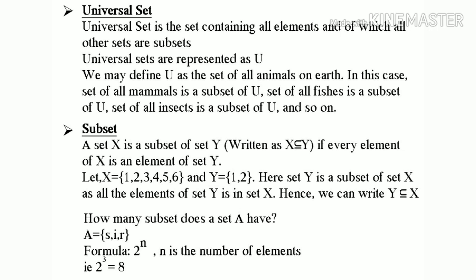Universal set is the set containing all elements, and of which all other sets are subsets. Universal sets are represented as U. We may define U as the set of all animals on earth. In this case, set of all mammals is a subset of U, set of all fishes is a subset of U, set of all insects is a subset of U, and so on.